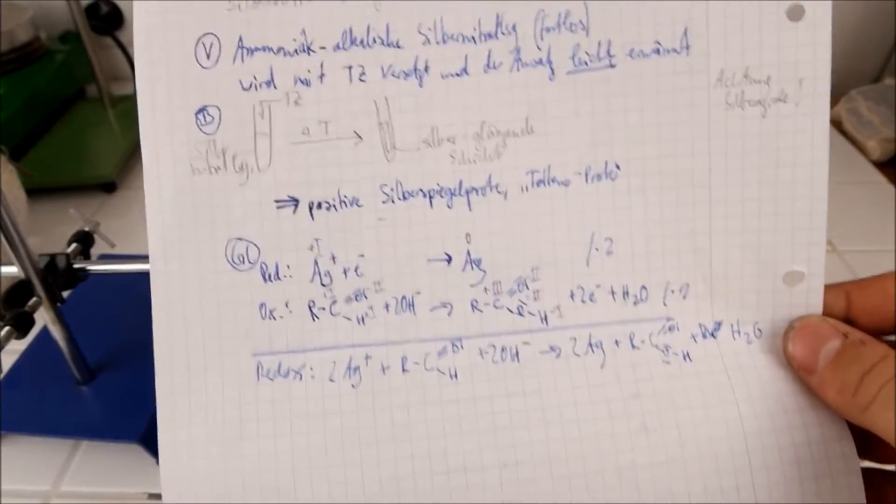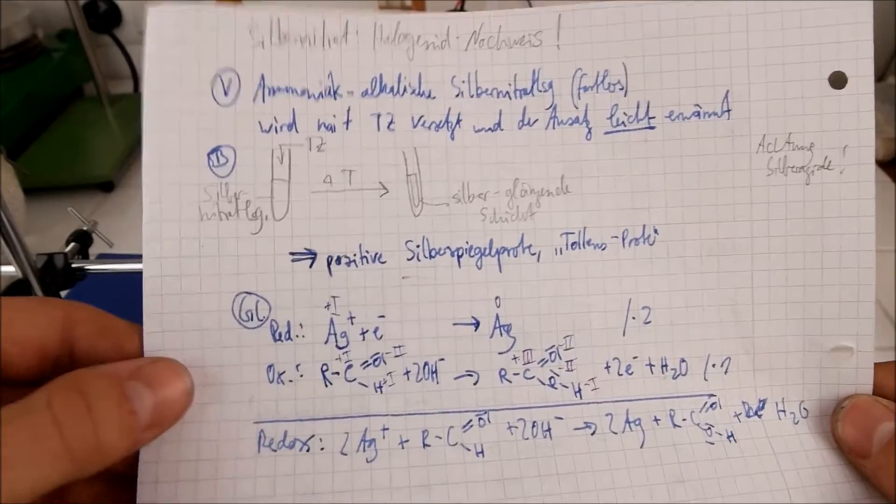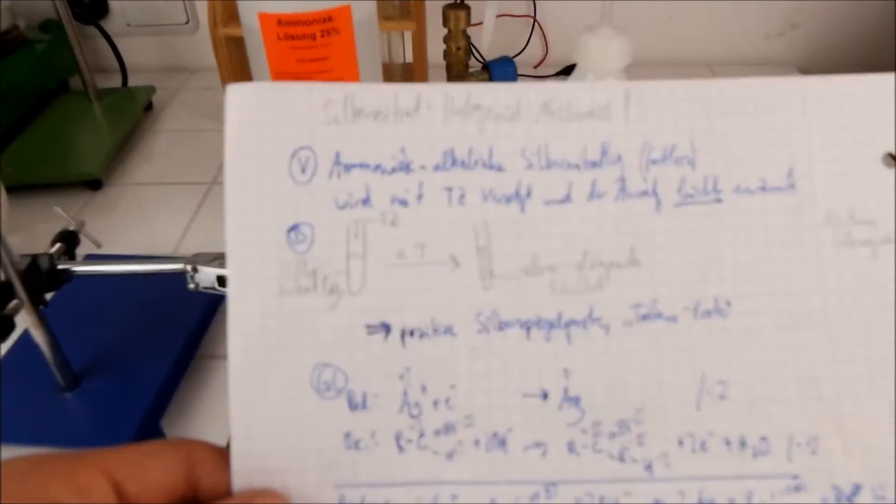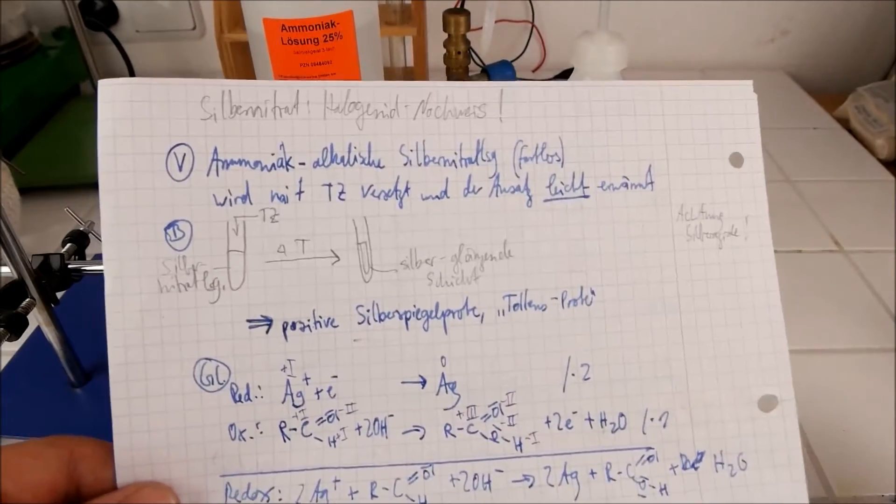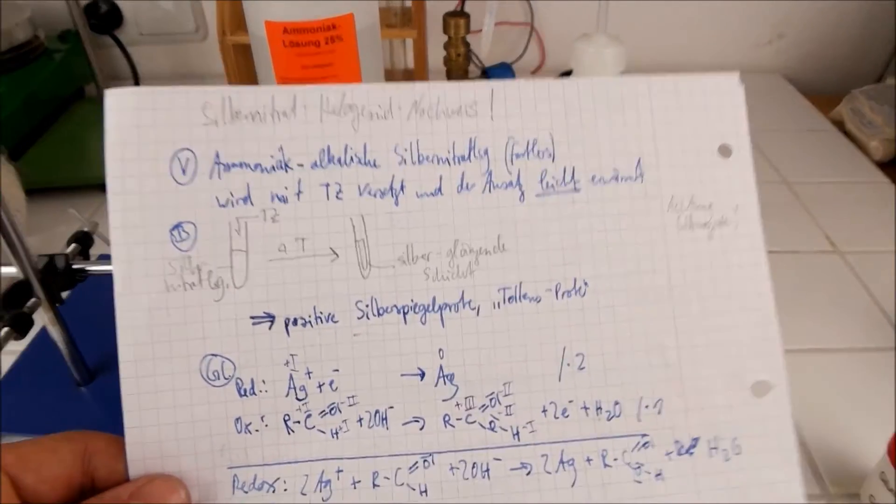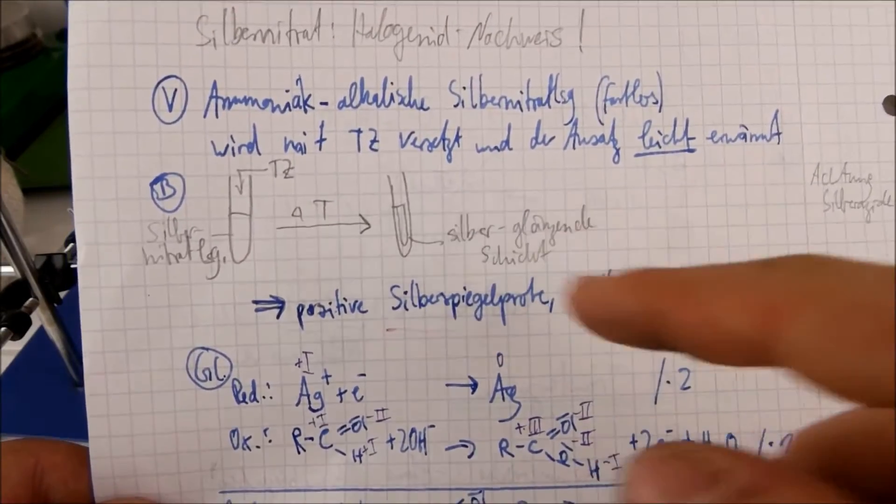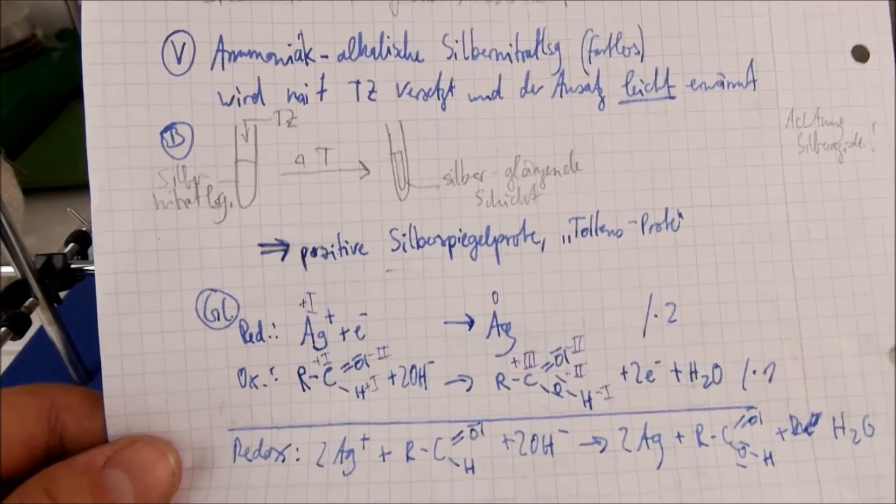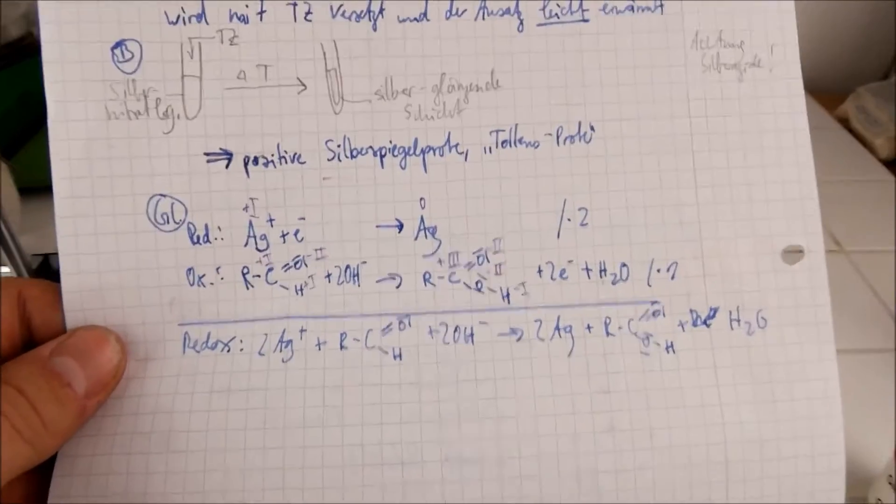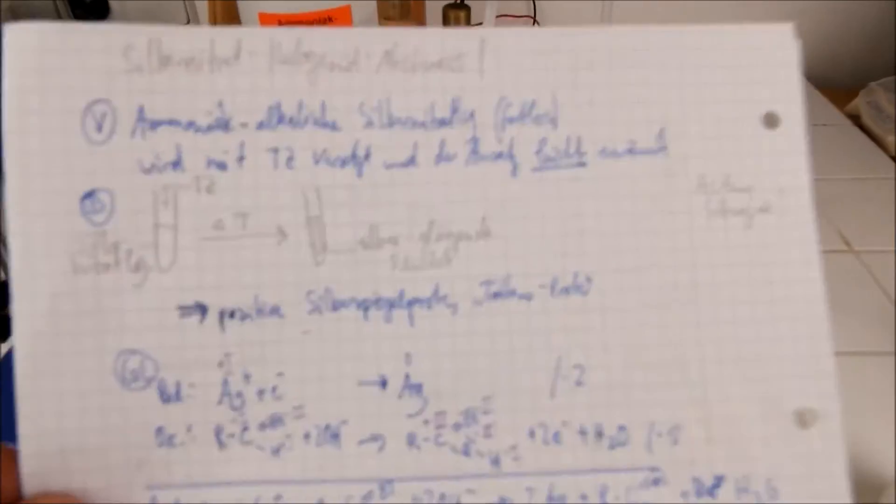And here is the experiment. The Tollens reagent, we will pour in a test tube together with the molecule we want to examine, which is glucose in this case. Then we heat it up and we get a nice silver mirror on the test tube. And that's how you can find out if there is an aldehyde group in a molecule.